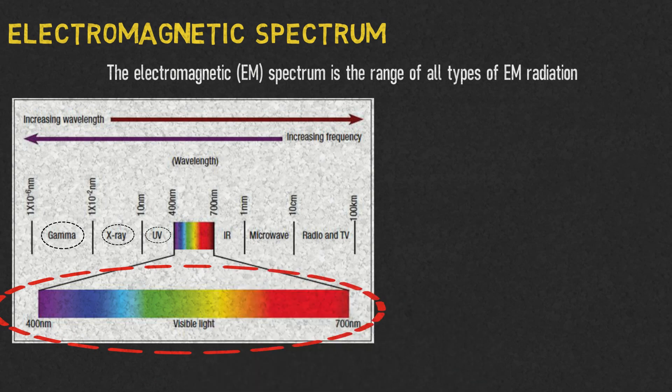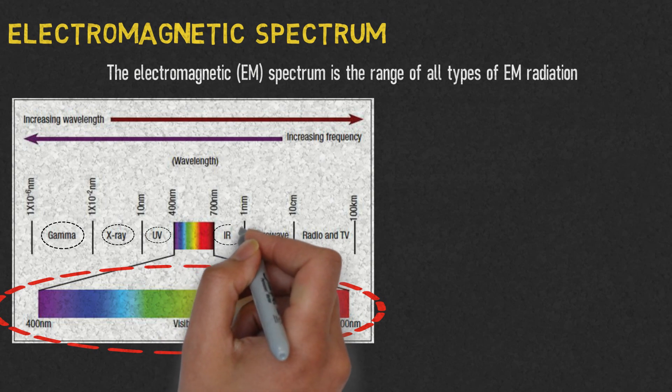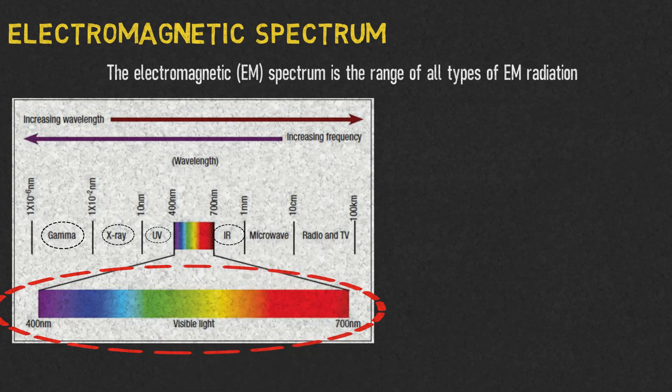Visible light rays: 400 nanometers to 700 nanometers. Infrared rays: 700 nanometers to 1 millimeter.